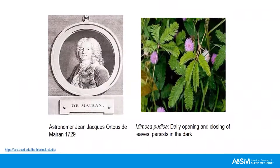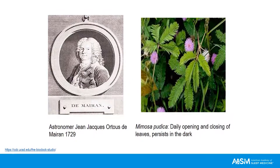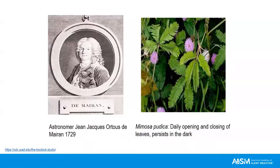Our understanding of circadian rhythms goes back to the 1700s when astronomer de Mairan observed the mimosa pedica plant open its leaves during daytime and close them at night. He wanted to know if this was just a reaction to light-dark changes, so he isolated the plant in darkness. The opening and closing of the leaves persisted, showing that the mimosa pedica's leaf movement was inherent to the plant, as opposed to a reaction to light and dark.